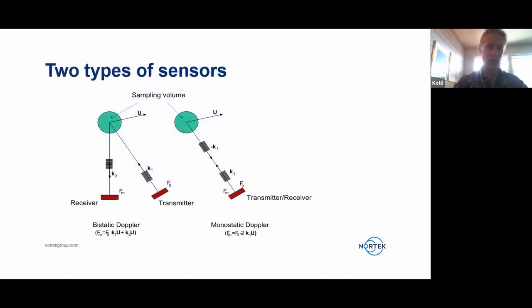There are two types of sensors, two types of configurations. One is where we use the same element as both the transmitter and the receiver. This is what we call a monostatic Doppler sensor, and it's typical for the traditional type of ADCP, the acoustic Doppler current profiler. The other type of instrument is where the transmitter and the receivers are located in different positions physically, where we transmit sound along one path and then receive along another one.